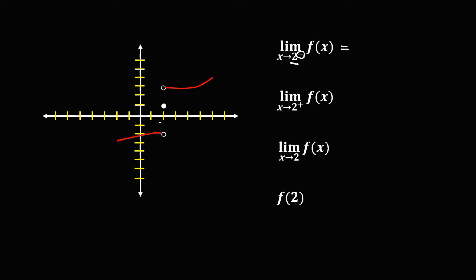Since positive 2 to the left means we look to the left of positive 2 on the graph, therefore the limit is equal to negative 2.